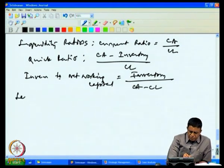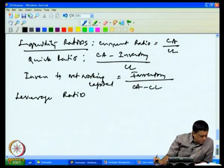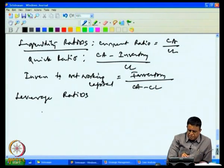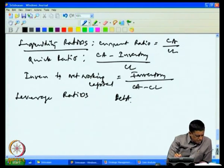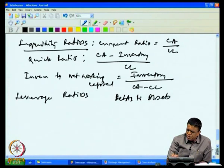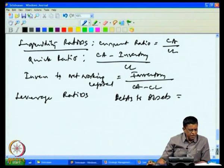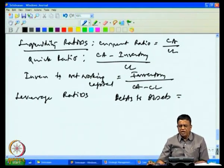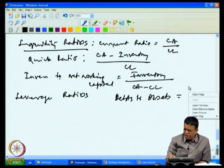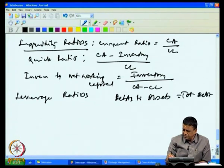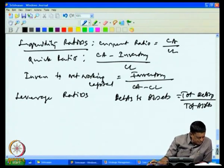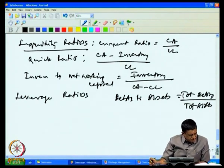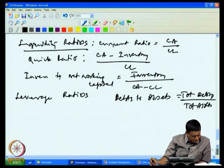The next type of ratios we are interested in is called leverage ratios. One is debt to assets: how much have you borrowed and what is the asset created? That is total debt divided by total assets. It measures the extent to which borrowed funds have been used to finance the firm's operations.